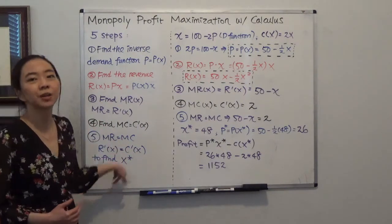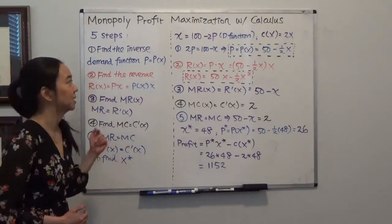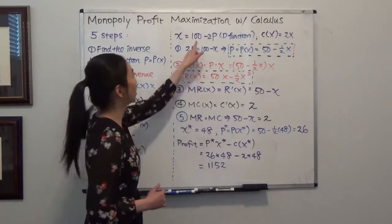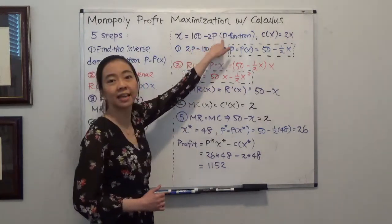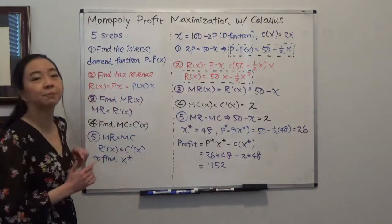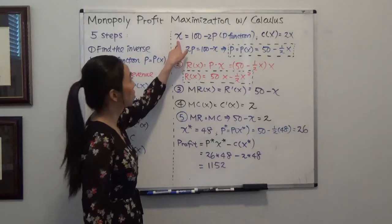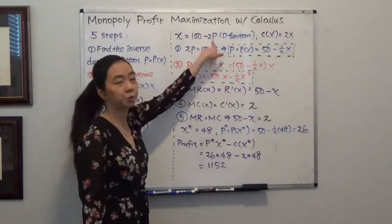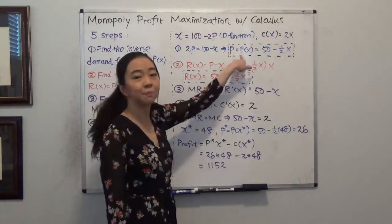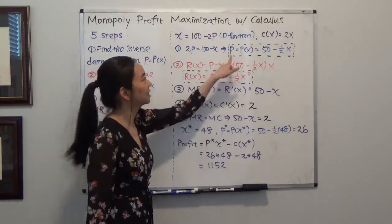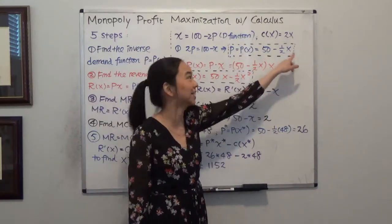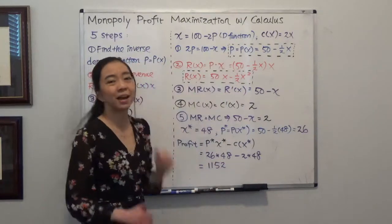So let's take a look at the example using our five steps. Our quantity demanded is equal to 100 minus 2p — that's our demand function. Now I'm going to find the inverse demand function. I know quantity is equal to 100 minus 2p, and I'm going to write price as a function of quantity. So you reverse it: price is equal to 50 minus one-half times quantity x. That's my price function.